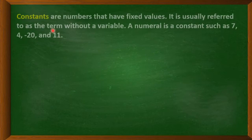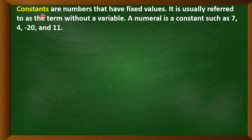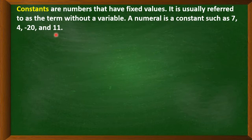Now we are going to define different terms that you will encounter as you go on with your study in algebra. First term: constants. Constants are numbers that have fixed values. It is usually referred to as the term without a variable. A numeral is a constant such as 7, 4, negative 20, and 11. Always remember, when we are talking about constants, they are numbers alone without a variable.